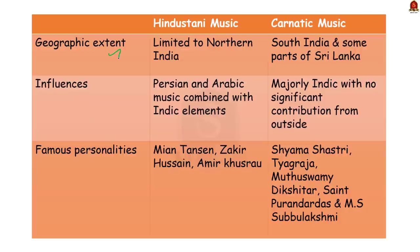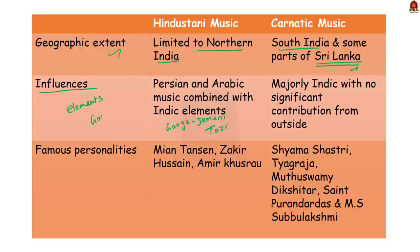First, let's look at the geographic area. Hindustani music is a classical music of the northern region of the Indian subcontinent, while Carnatic music, as the name suggests, belongs to the southern part of India. Note that Carnatic music is also performed in some parts of Sri Lanka. The second major difference concerns the elements present in each. Hindustani music arose in the Ganga-Jamuni Tehzeeb — a period of great Persian-Arabic influence in northern India. It combines Indian classical music with the Persio-Arabic musical language, resulting in a unique Gharana system of musical education. So Hindustani music has elements of Indian, Persian, and Arabic influence.